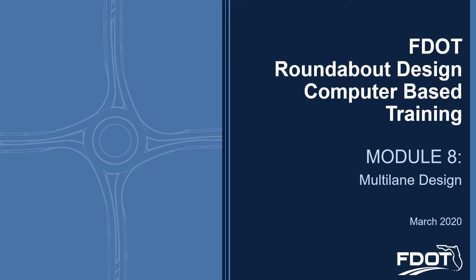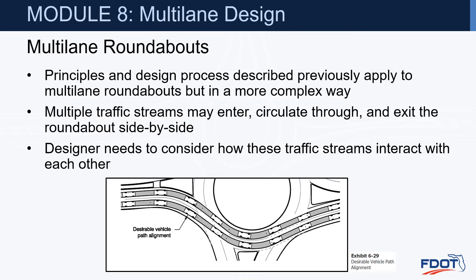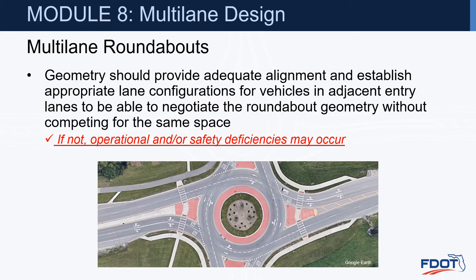Module 8: Multilane Design. The principles and design process described previously apply to multilane roundabouts, but in a more complex way. We now have multiple traffic streams that may enter, circulate through, and exit the roundabout side-by-side, and the designer needs to consider how these traffic streams interact with each other. The geometry should provide adequate alignment and establish appropriate lane configurations for vehicles in adjacent entry lanes to negotiate the roundabout geometry without competing for the same space. If not, we could have operational and/or safety deficiencies.